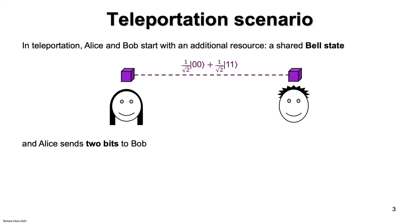In the teleportation scenario, Alice and Bob start with an additional resource, a shared bell state. So at the very beginning, there's a bell state where Alice has the first qubit and Bob has the second qubit. Then Alice receives her qubit that she wants to teleport.